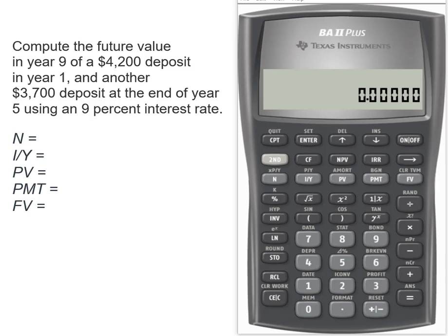Right, so we're going to make this deposit in year one, but in the beginning of year nine it will have only grown for eight years. And then my $3,700 deposit at the end of year five is only really going to have grown for four years.